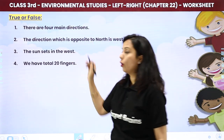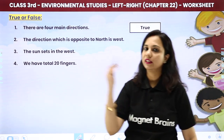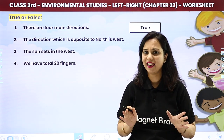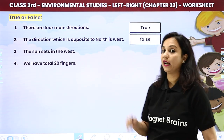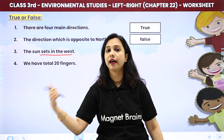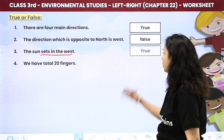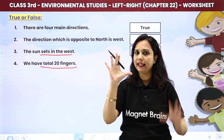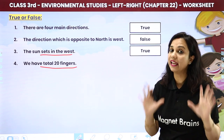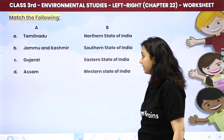True or False. There are four main directions — true, because north, south, east, and west are the four main directions. The direction opposite to north is west — this is false, because the direction opposite to north is south. The sun sets in the west — this is true. We have 20 fingers — this is false, because we have 10 fingers.